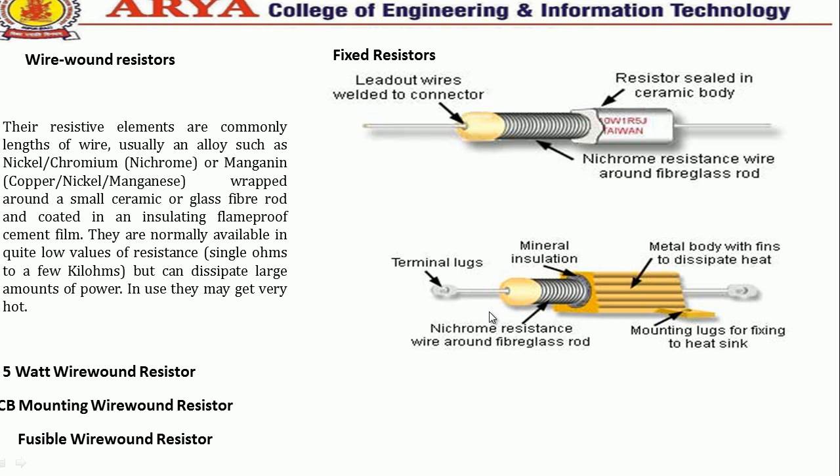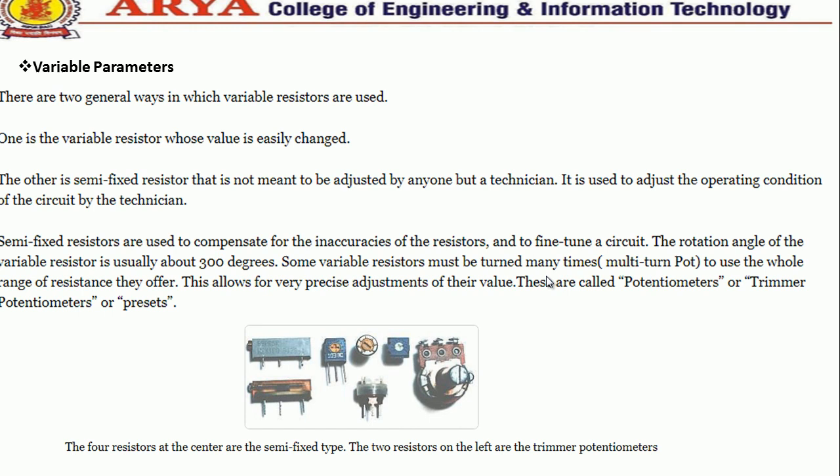The other category is variable resistors. There are two general ways in which variable resistors are used: one is the variable resistor whose value is easily changed, and the other is a semi-fixed resistor that is not meant to be adjusted by anyone but a technician. It is used to adjust the operating condition of the circuit.